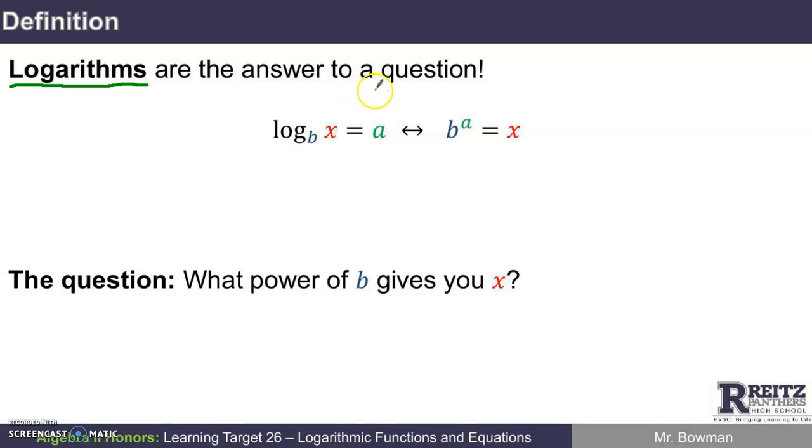Logarithms are the answer to a question. So the statements here are equivalent statements. The side here on the right side is what you might call exponential form. And it essentially is an exponential equation, B to the A power equals X. An equivalent statement over here on the left side is what we call logarithmic form.